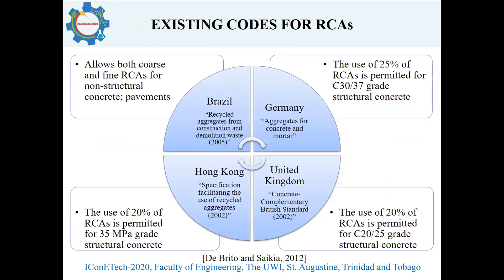What are some existing codes for recycled concrete aggregates? Several countries have developed specifications for the use of recycled concrete aggregates based on available material within their respective countries. For example, Hong Kong uses 20% of recycled concrete aggregates for 35 MPa structural concrete. However, Germany utilizes 25% replacement for grade 30 to 37 structural concrete.